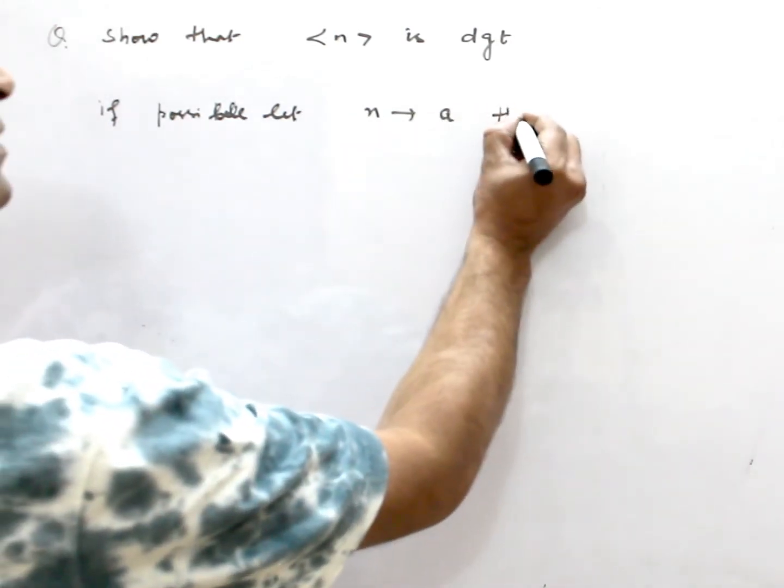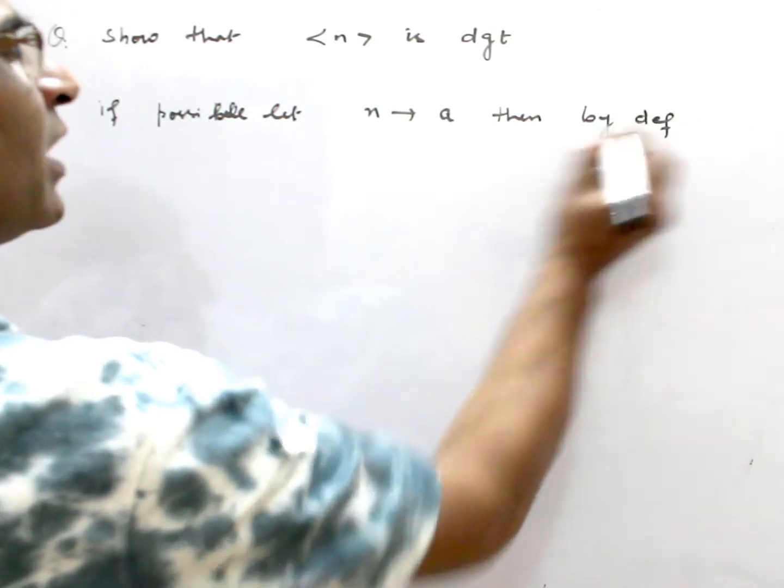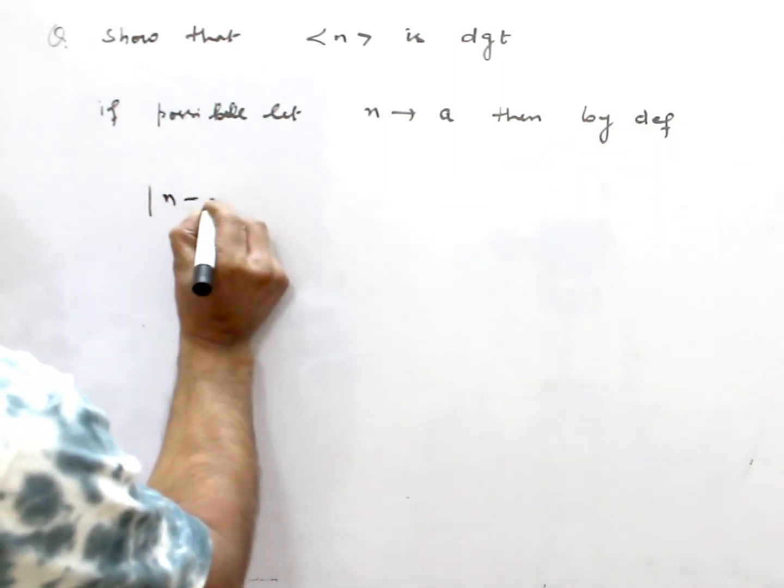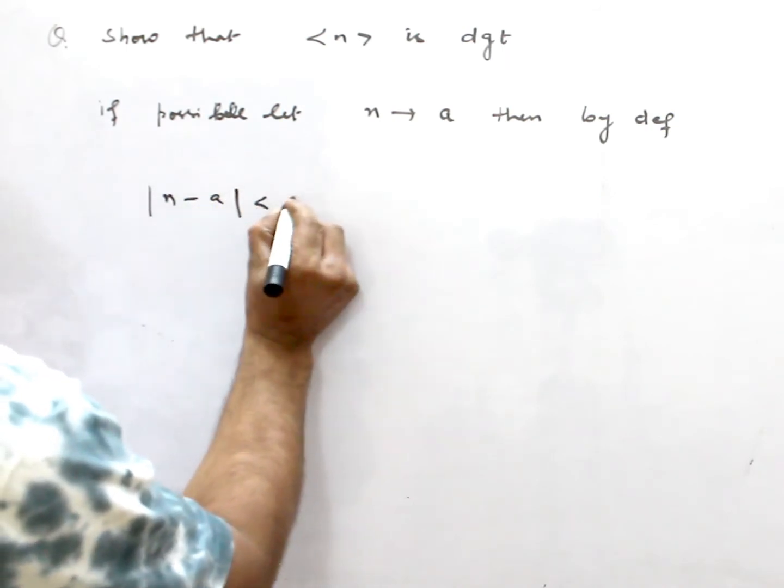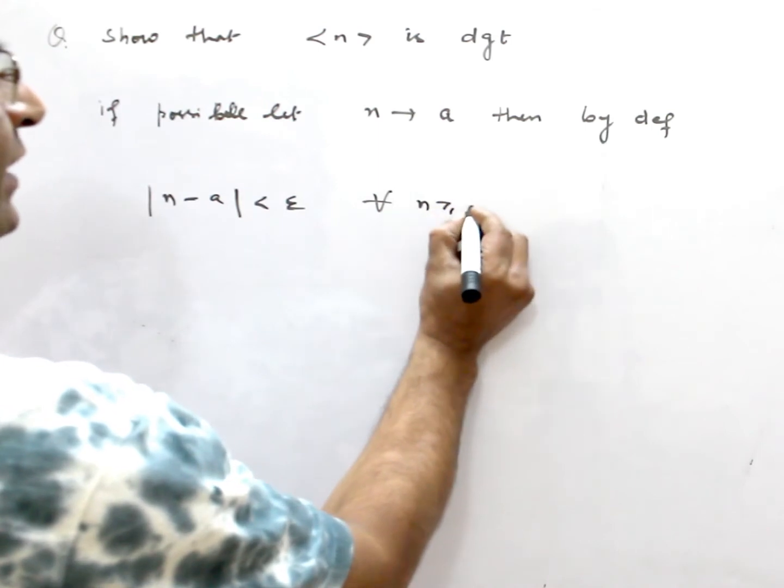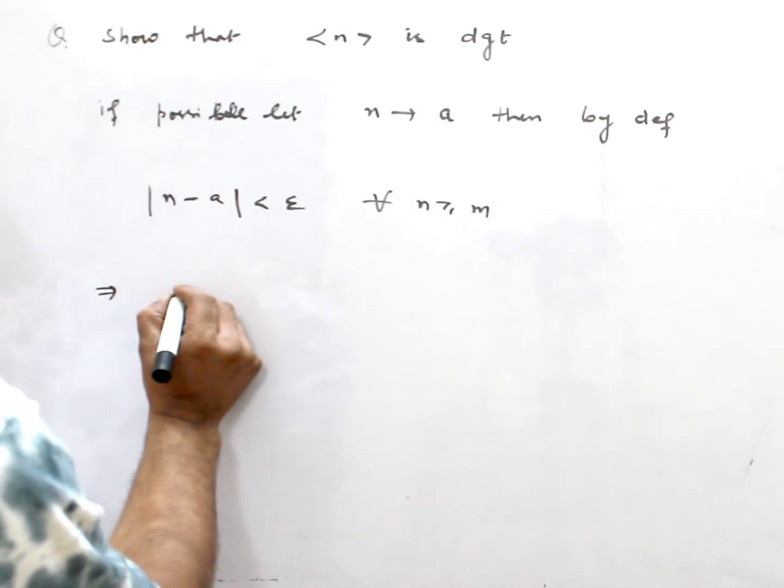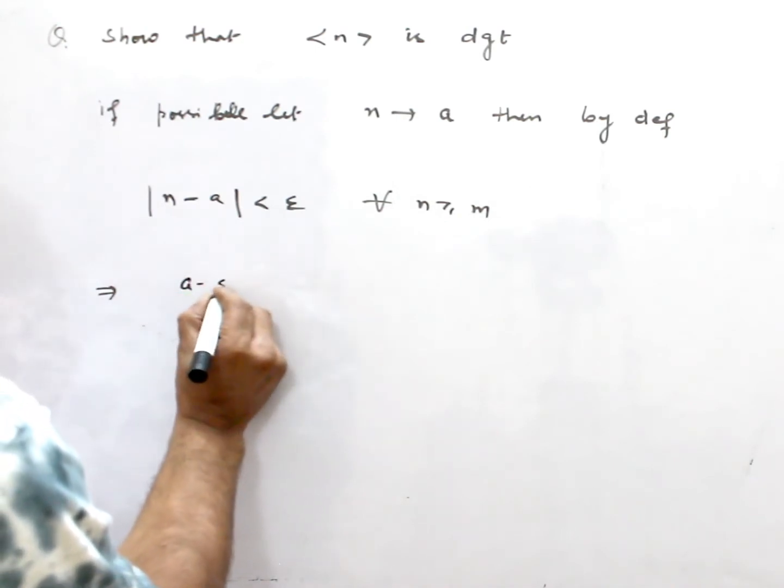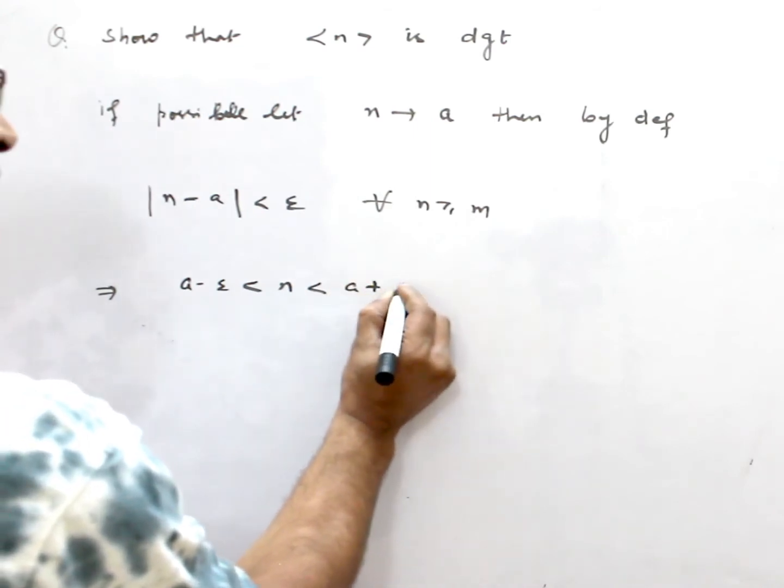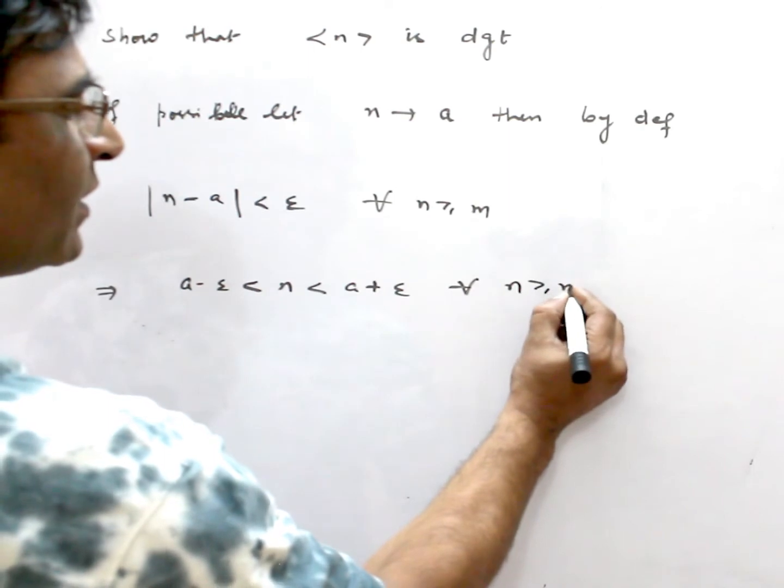Then by definition, |n - a| < ε for all n ≥ m. This is the definition. This means a - ε < n < a + ε for all n > m.